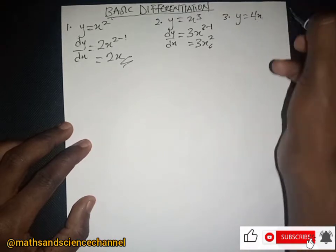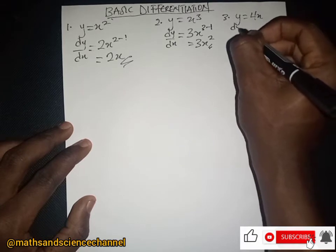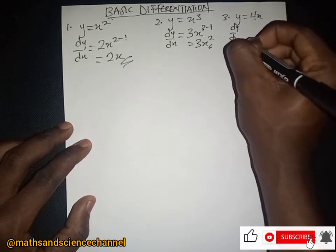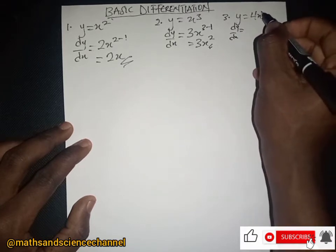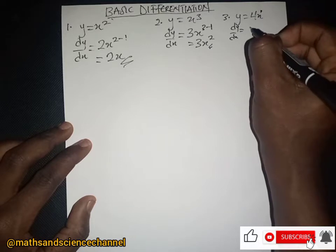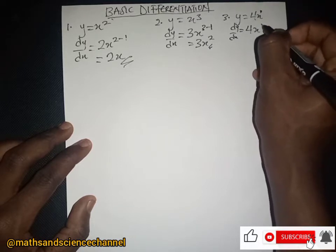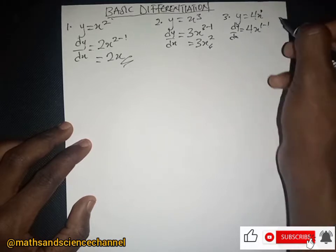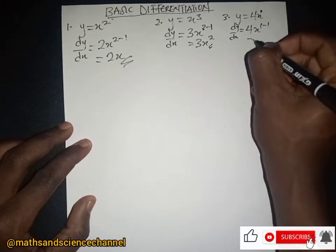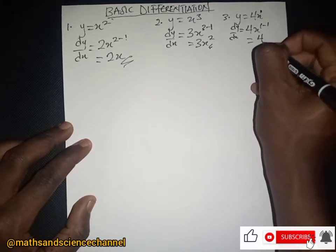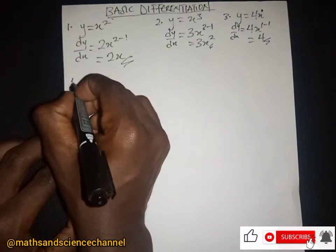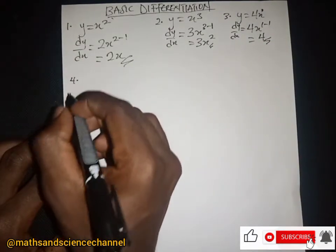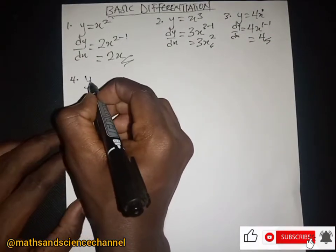Let's take for instance we have y equal to 4x. The dy/dx will be equal to — it has a power of one, so we drop the one, which gives the same as four, then we subtract one from it, and we just have four as the answer.